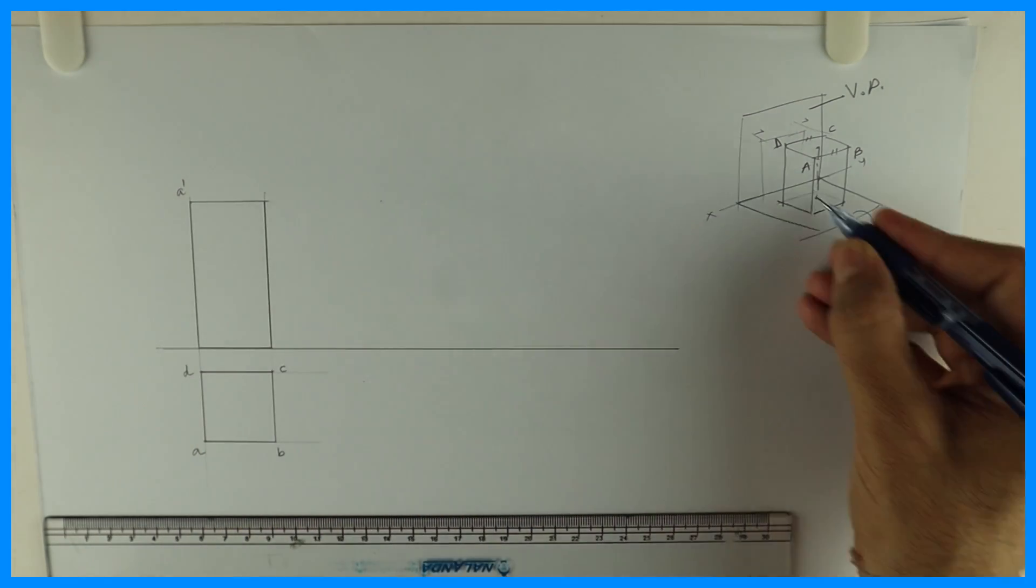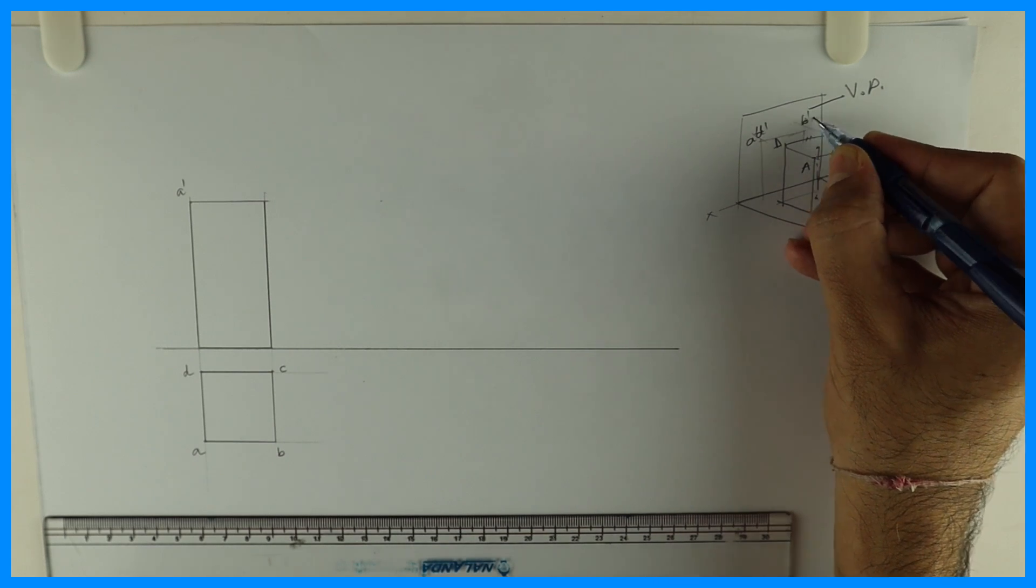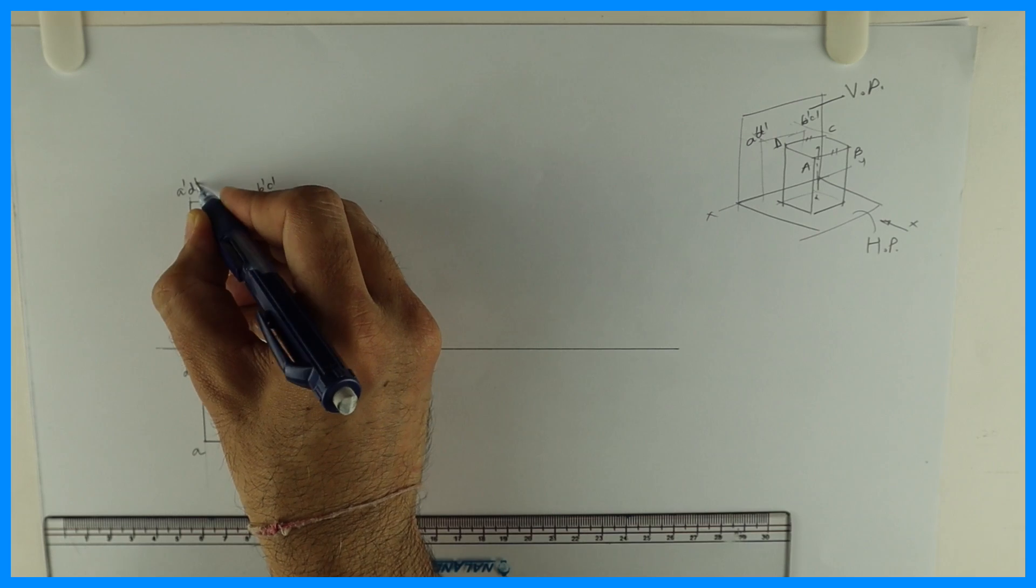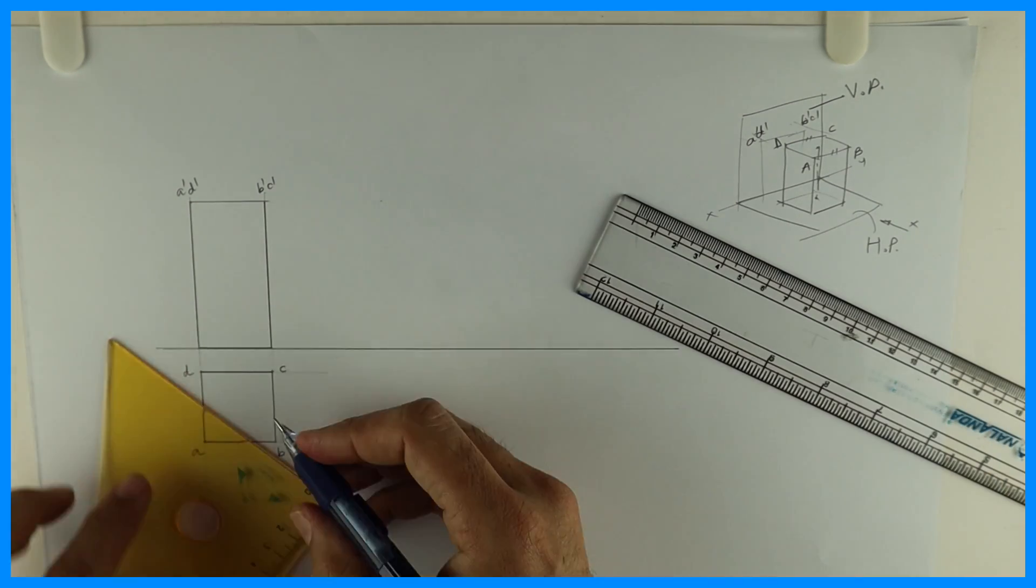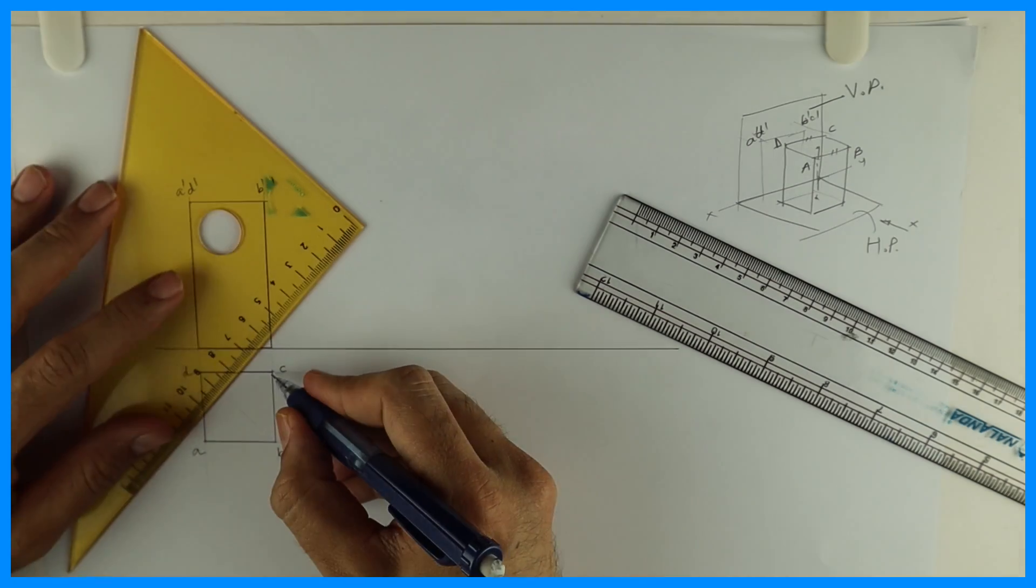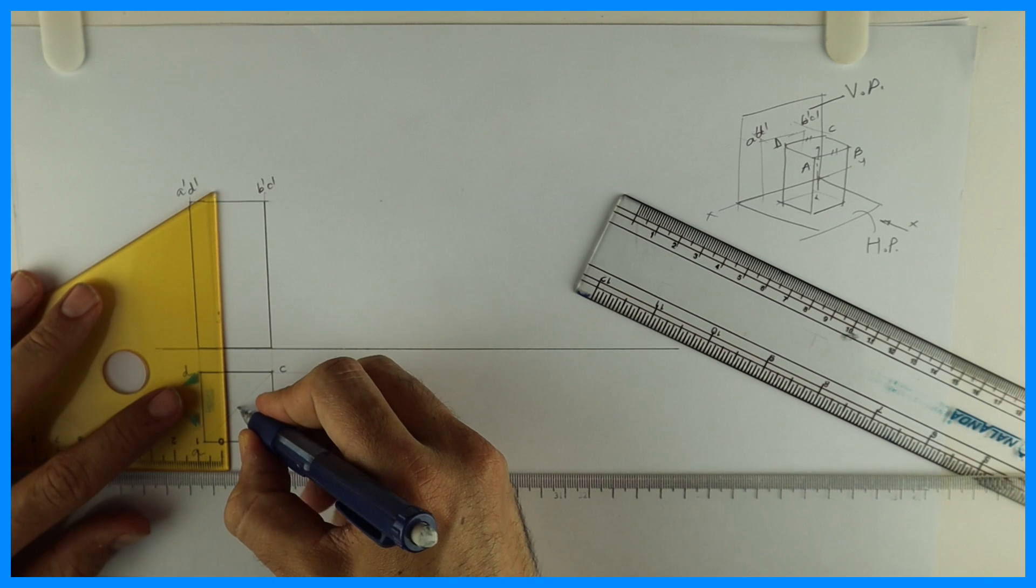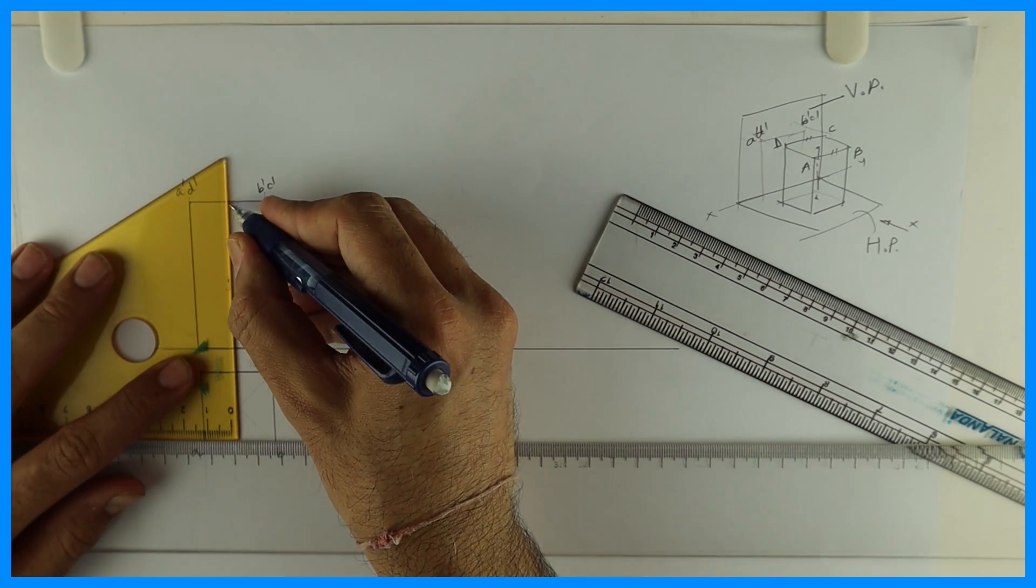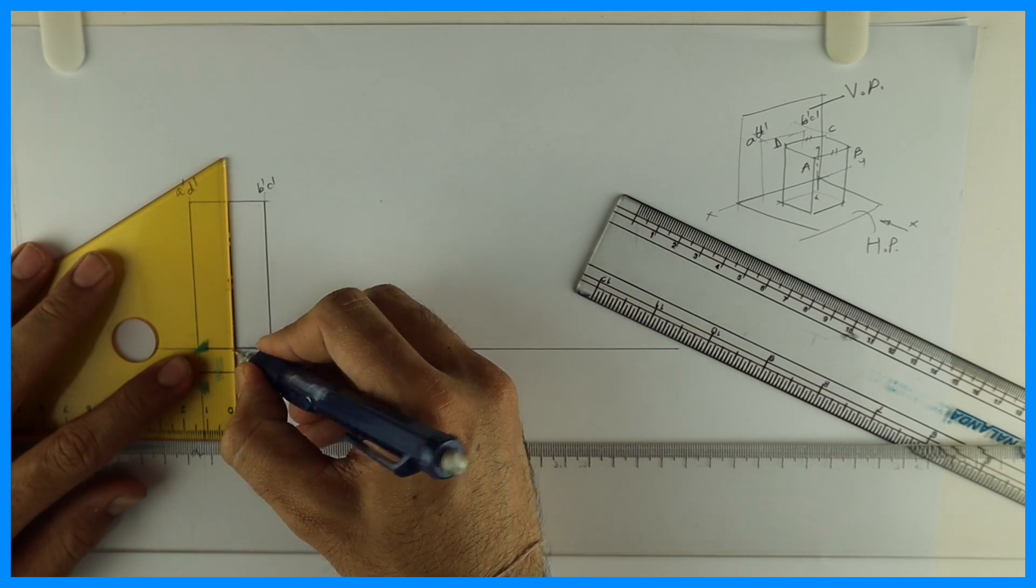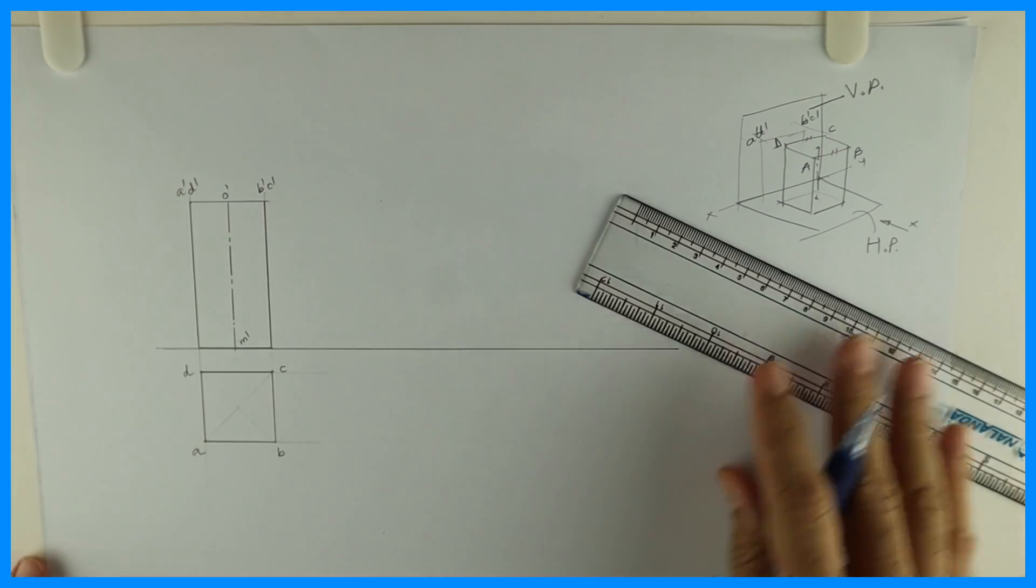This is A dash. See this. When you see from here, A dash, D dash and B dash, C dash. These are perpendicular to VP. Now I'm finding out axis. O dash, M dash.